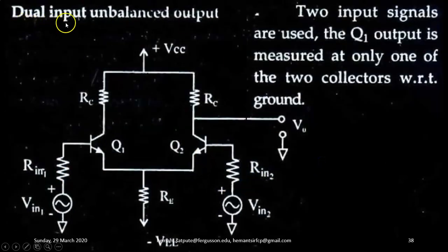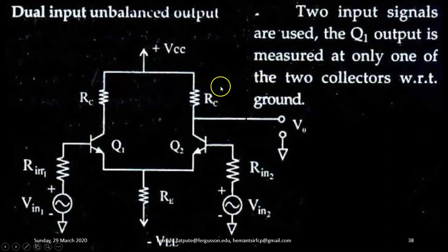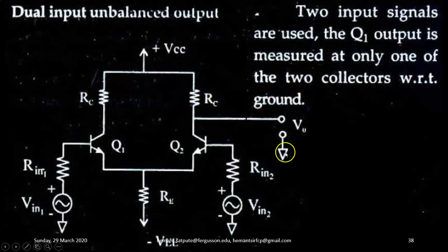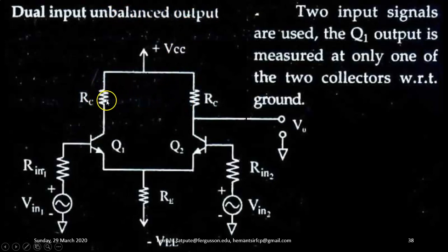The next configuration is dual input, unbalanced output. Two input signals VIN1 and VIN2 are used, and the output is measured at only one of the two collectors with respect to ground. Two inputs are present, that's why dual input, and output is taken from one collector, that's why unbalanced output. All components are perfectly matched — both RCs, both RIN, RE, and both transistors.